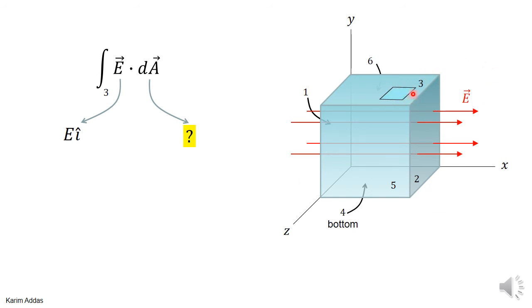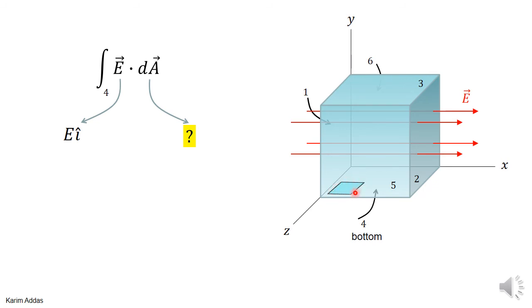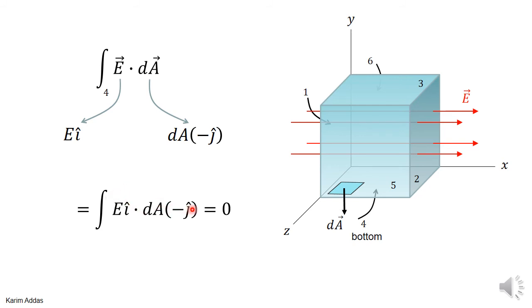For surface three, the top surface, the area vector points in the plus j direction. You get E·i dotted into dA·j. Since i hat·j hat equals zero, the flux is zero — the angle between the electric field and area vector is 90 degrees. Similarly, for surface four, the bottom surface, the area vector points in the minus j hat direction. Again i hat·j hat equals zero, so you get zero electric flux through the bottom surface as well.